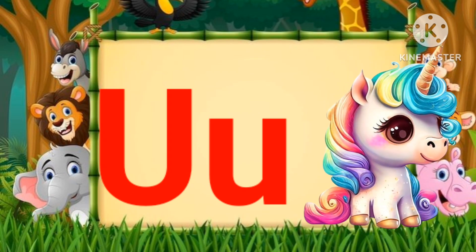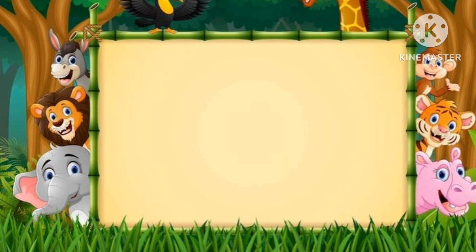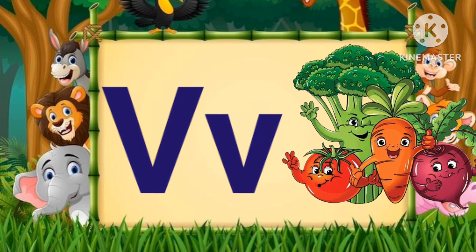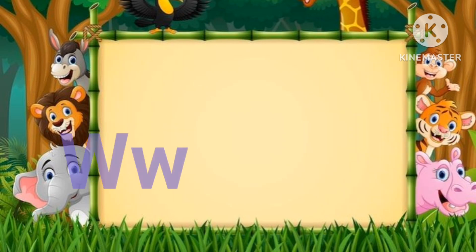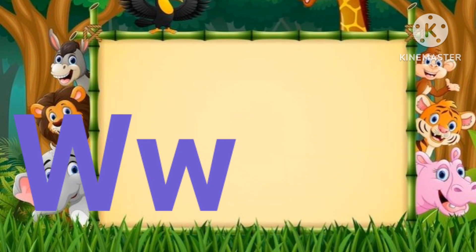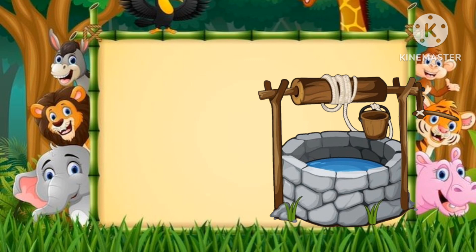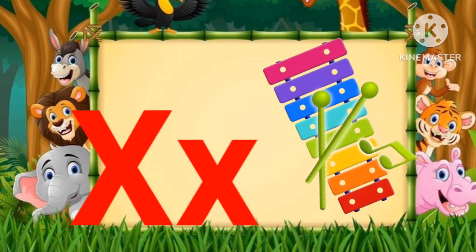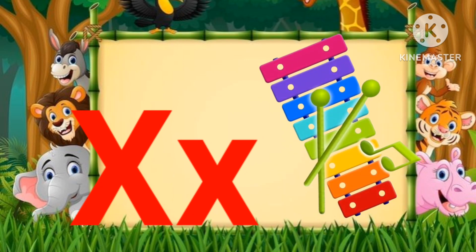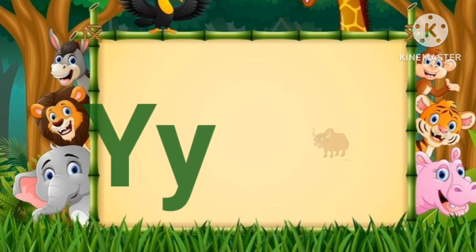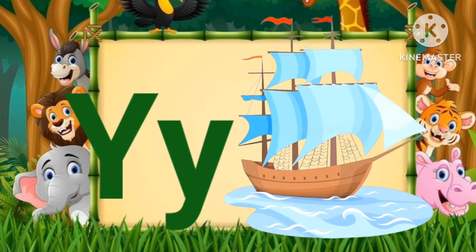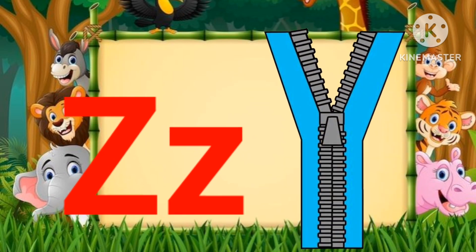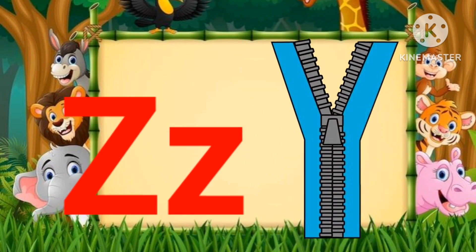U for umbrella, U for unicorn. V for violin, V for vegetable. W for watch and W for wolf. X for x-ray, Y for yak, Y for young. Z for zebra, Z for zip. Thank you.